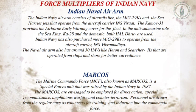The Indian Naval Air Arm consists of aircraft like the MiG-29K, Sea Harrier jets, and the Kamov-31 helicopter providing airborne early warning cover for the fleet. In the anti-submarine role, it operates the Sea King and Ka-28, as well as the domestically built HAL Dhruv helicopter. The naval arm also includes around 30 UAVs such as the Heron and Searcher.